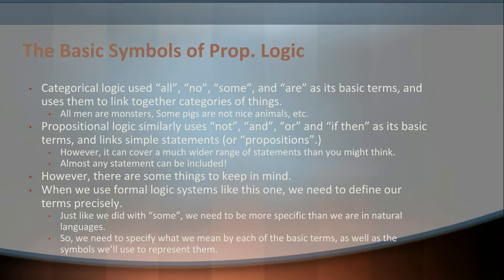Categorical logic used a few basic terms — all, no, some, and are — to construct the four different statements: the A, E, I, and O statements. It used those in different combinations with different categories of things. You could build each of the four statements just using those four words and swapping in variables like letters in exchange for the categories you were working with, getting statements like 'all men are monsters' or 'some pigs are not nice animals.' Propositional logic has its own set of basic terms: NOT, AND, OR, and IF-THEN. And it uses these to link together simple statements or propositions.